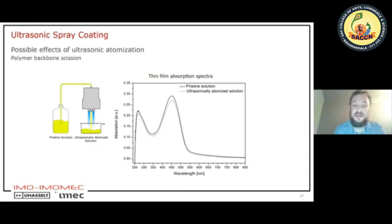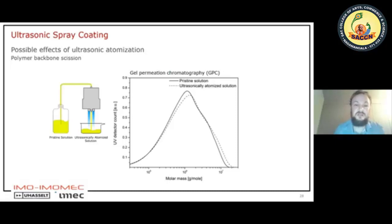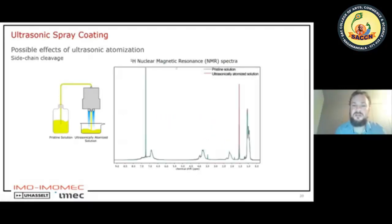To dive deeper, we did chemical analysis of the polymer using GPC (gel permeation chromatography). The molar mass did not really change — a small increase in the ultrasonic atomized solution, which was strange, but based on this we concluded there is no backbone scission and the polymer length stays intact. Using FTIR (Fourier transform infrared spectroscopy), we compared the pristine solution with the ultrasonic atomized solution — all peak coincidences, no real difference. We also did NMR (nuclear magnetic resonance spectra) and saw no significant differences in chemical shifts.